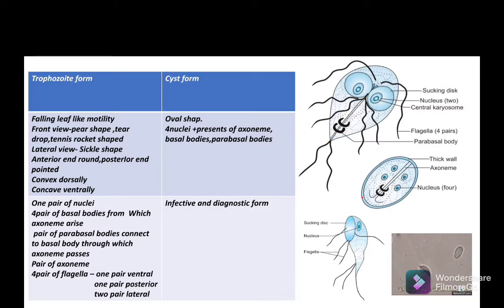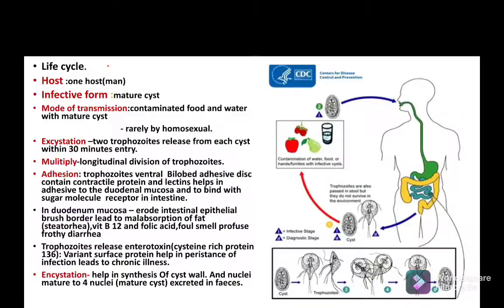The cystic form has an oval shape with four nuclei, a pair of axonemes, and parabasal bodies connecting. It is both the infective form and the diagnostic form.